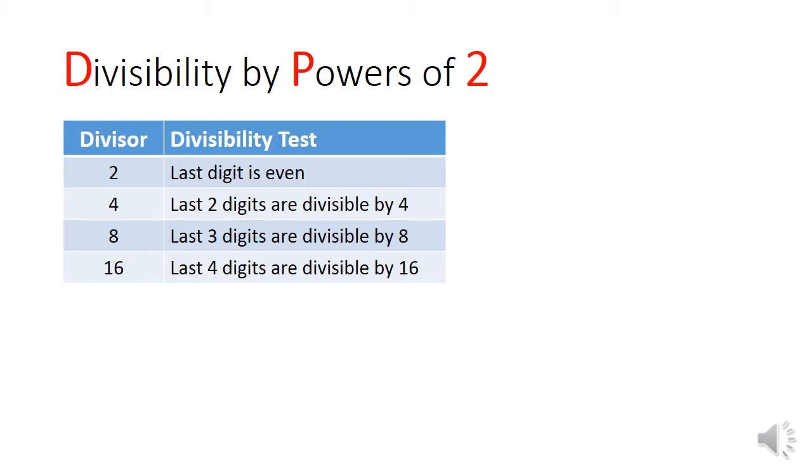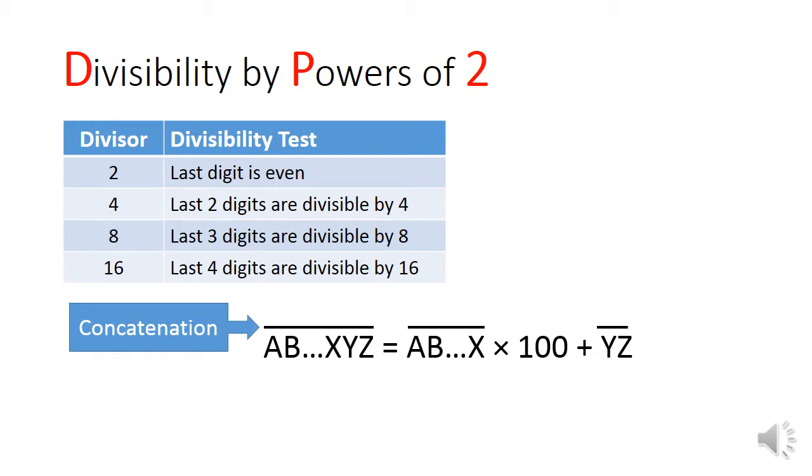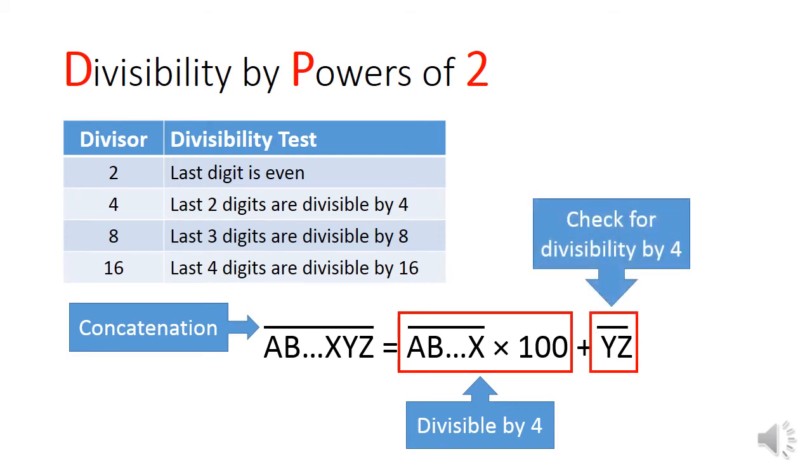The proof isn't that difficult, but let me just show you the divisibility for 4. I'm going to write out a very long number, a, b, all the way to x, y, z. I'm going to use an overbar as a symbol for concatenation. Next, I can write this number as a string of a, b, all the way to x multiplied by 100 plus the concatenation of y and z. I can see that because 100 is divisible by 4, the first group highlighted in red must be divisible by 4. Hence, to check the divisibility by 4, I only need to check the divisibility of the last 2 digits.